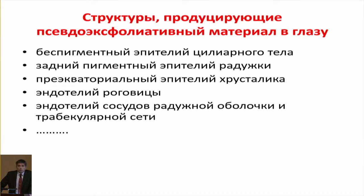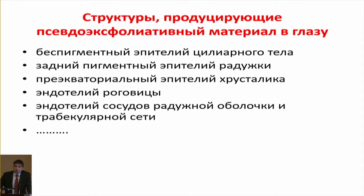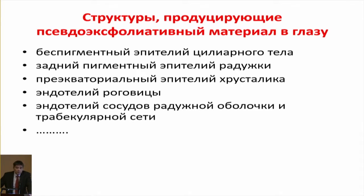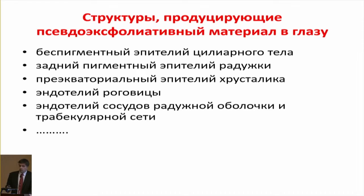In the context of treatment, beside the traditional structures such as the anterior capsule of the lens and iris, the structures that produce pseudo-exfoliative material include a number of other tissues, including the epithelium of the trabecular meshwork. This possibly explains the temporary effect from procedures offered as novel treatment methods, such as trabecular aspiration, since the trabecular itself is a source of continued production.